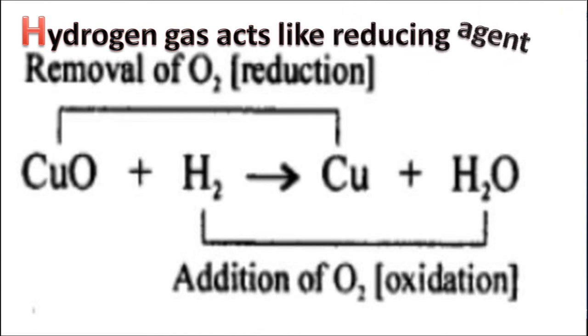Hydrogen gas acts as a reducing agent. It reduces metal oxide to metal. For example, when copper oxide is heated with hydrogen, it reduces copper oxide to copper and water is produced.